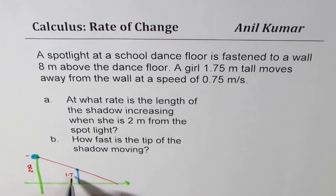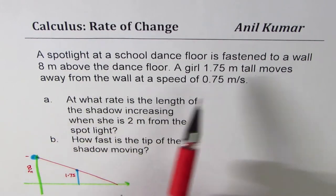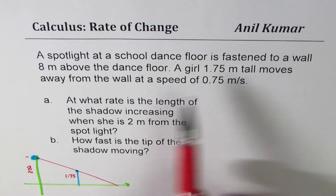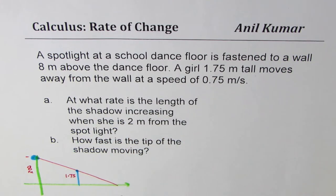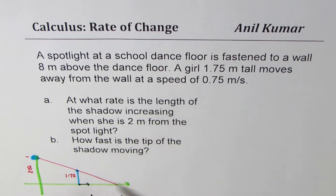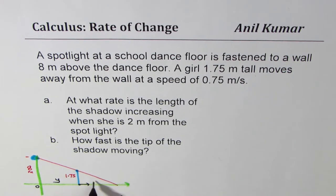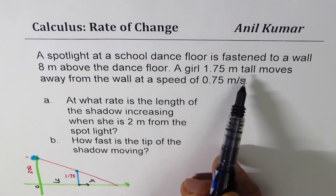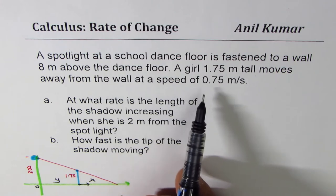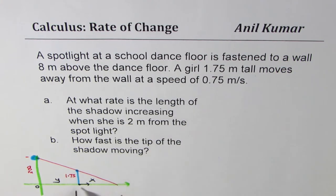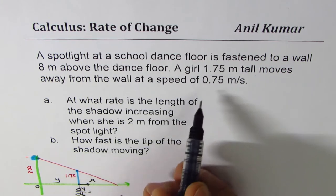The height of the girl is 1.75 meters. We are given that she moves away from the wall at a speed of 0.75 meters per second. Let's define some variables: from the wall, let's call the origin O. The distance of the girl from the wall is Y, and X is the length of the shadow. Since the girl's distance is increasing, the speed is the rate of change of Y, so dy/dt equals 0.75.